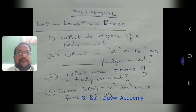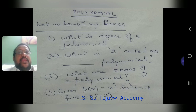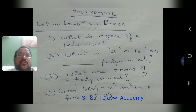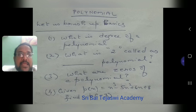Question number 3: what are zeros of a polynomial? Let f of x be a polynomial. If a number 'a' is a zero of polynomial f of x, then f of a equals 0. You have to write the answer like this for exam purposes: let f of x be a polynomial; if f of a equals 0, then a is said to be a zero of the polynomial.